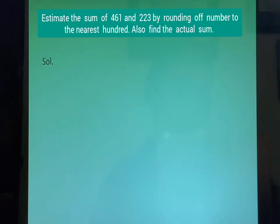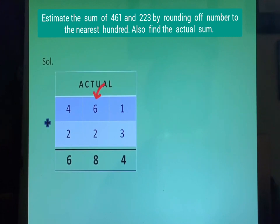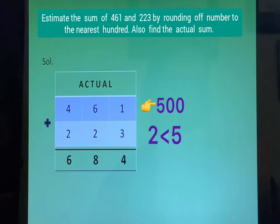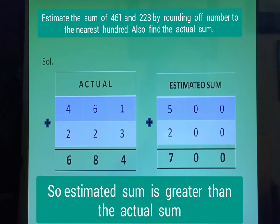Example 2: Estimate the sum of 461 and 223 by rounding off numbers to the nearest 100, and also find the actual sum. First, we find the actual sum by writing the numbers one below the other and adding. When we add 461 and 223, we get 684. Now let us find the estimated sum. The 10's digit of 461 is 6. Since 6 is greater than 5, rounding off 461 gives 500. The 10's digit of 223 is 2. Since 2 is less than 5, rounding off 223 gives 200. When we add 500 plus 200, we get 700. So the estimated sum 700 is greater than the actual sum 684.